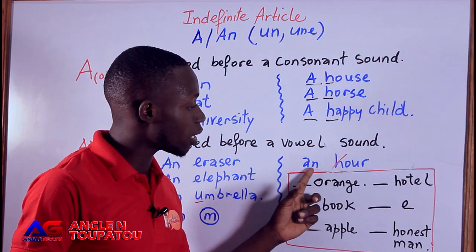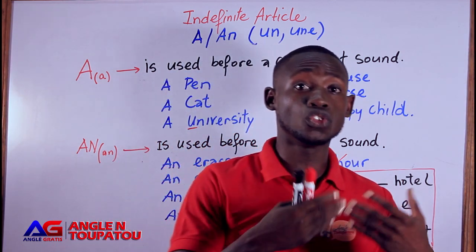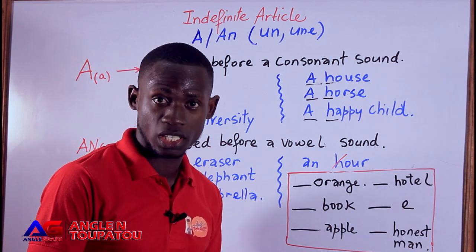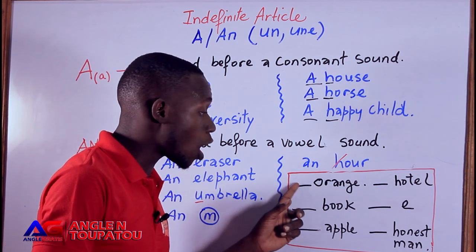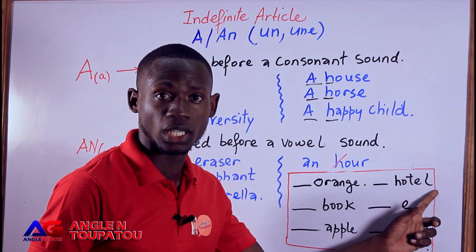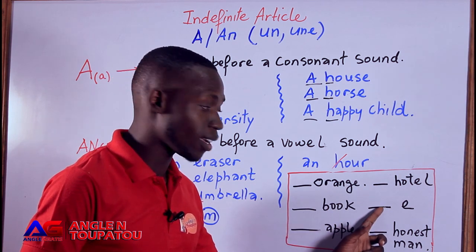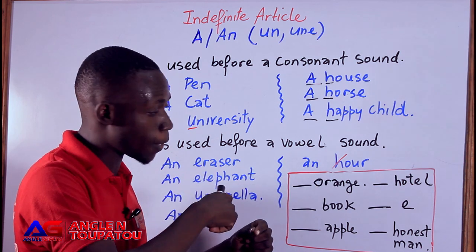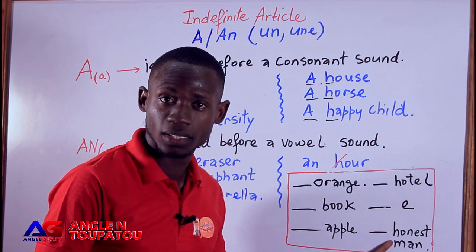Now you are going to finish learning how to use 'A' and 'AN' before nouns. Here is a little exercise to do in the comments. We have 'orange' — in English it's 'orange'. Is it 'an orange' or 'a orange'? Is it 'a hotel' or 'an hotel'? Is it 'a book' or 'an book'? Is it 'a i' or 'an i'? And the last one: is it 'an honest man' or 'a honest man'? Write your answers in the comments.